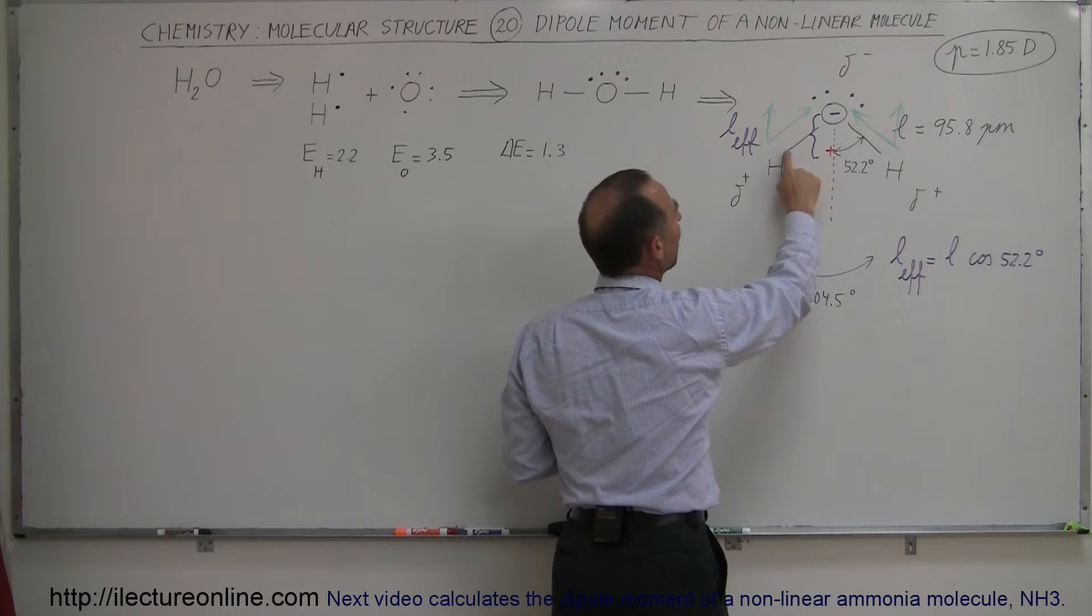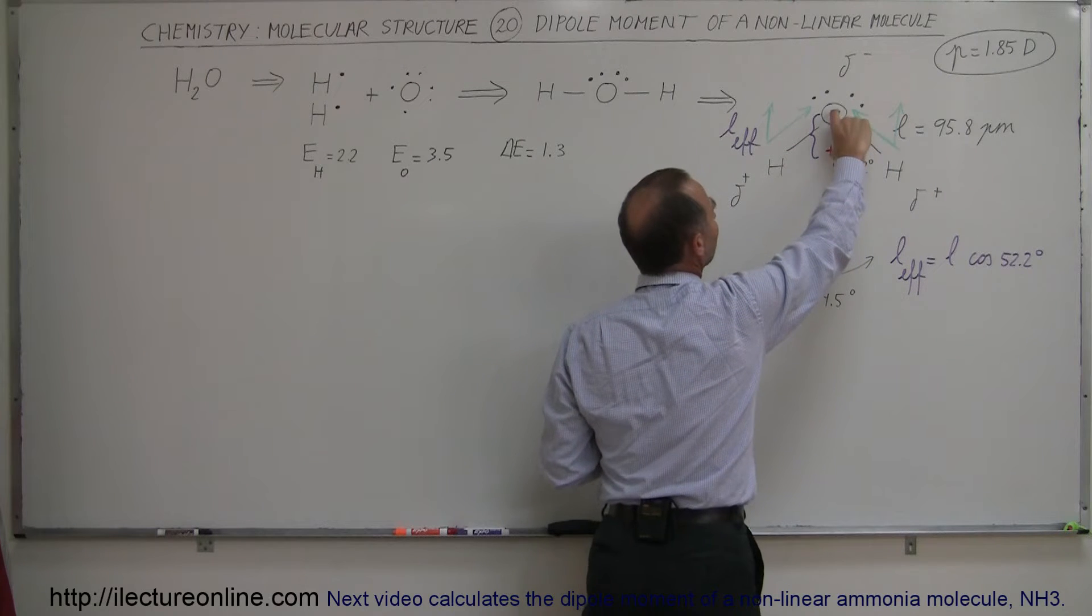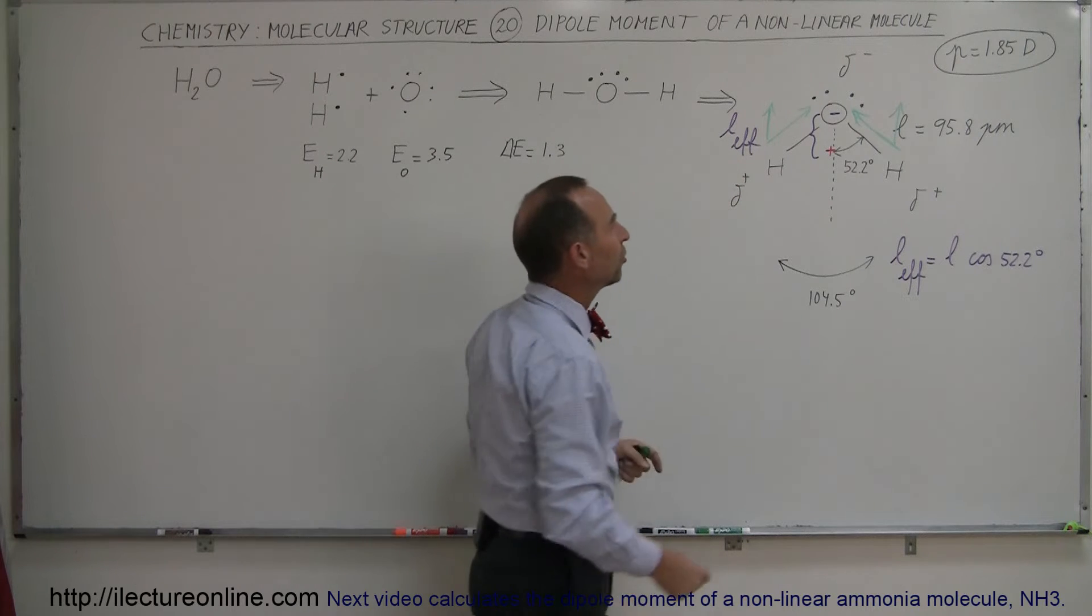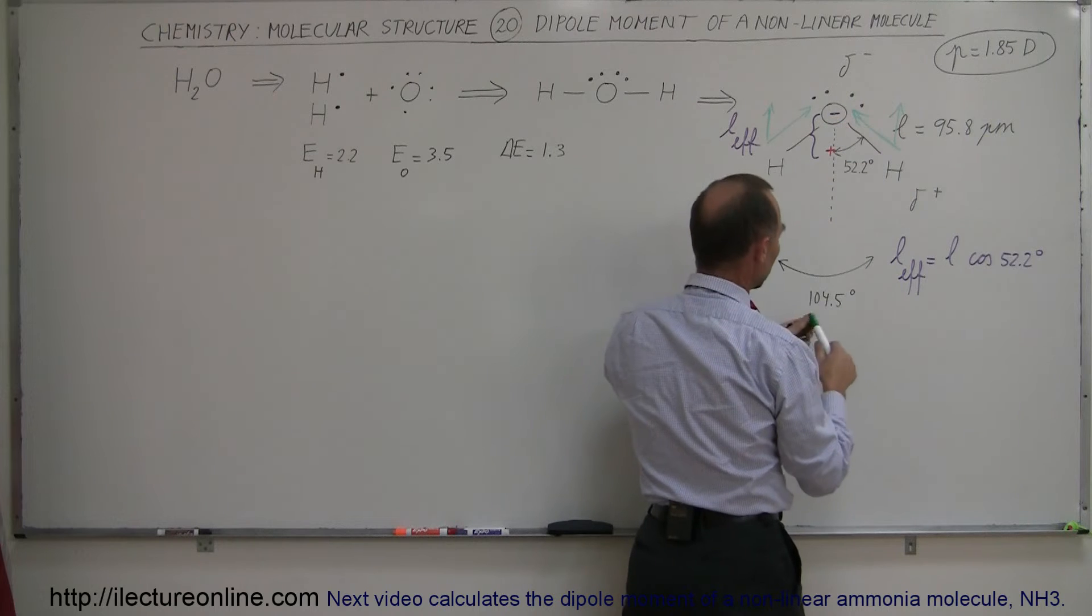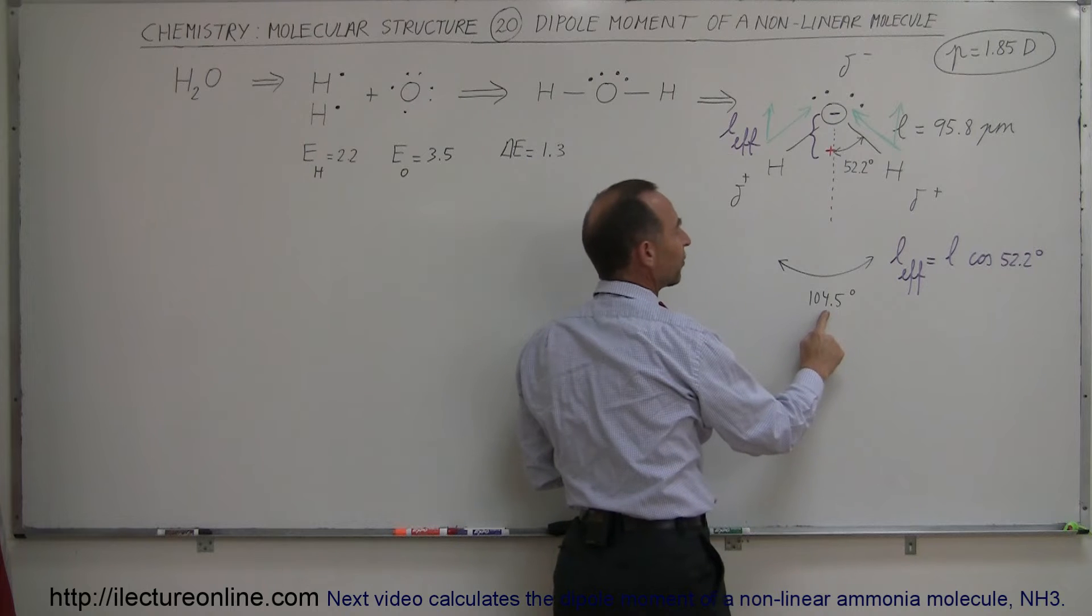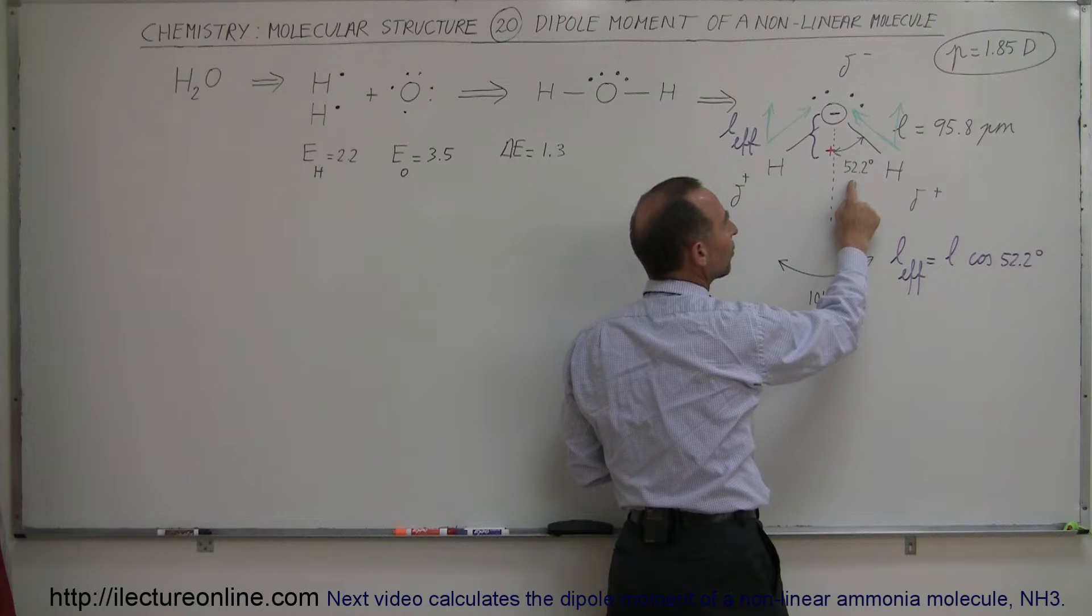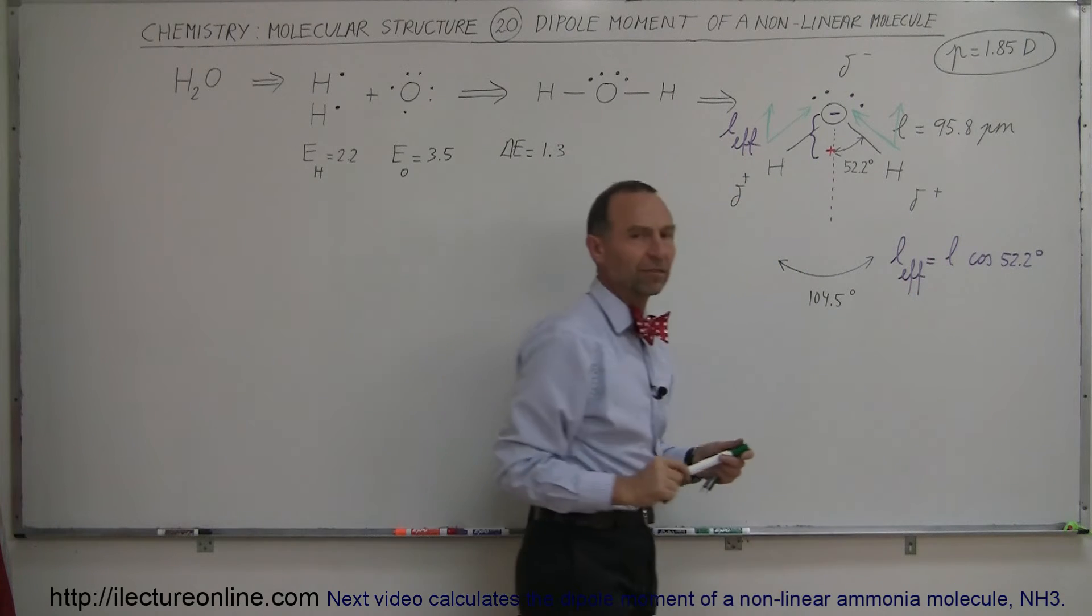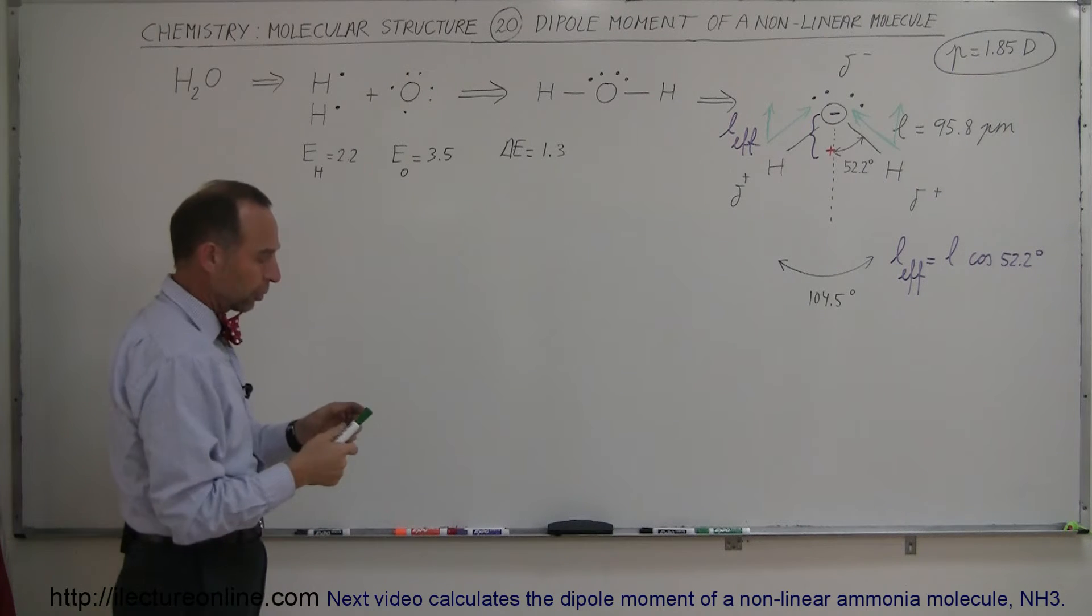So by taking the distance from where the positive charge would be on the horizontal line between the two hydrogens, by taking this distance we take the effective distance, and that's what we have here. L effective, which is equal to the length L times the cosine of this angle. Notice that the bond angle between the two hydrogens and water is 104.5 degrees, so the angle between one of the hydrogens and the vertical line is 52.2 degrees. And so if we take the cosine of that angle times the bond length, we get the effective length. And that's how we find the dipole moment of a bent molecule like that.